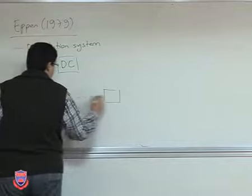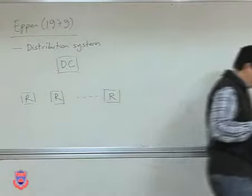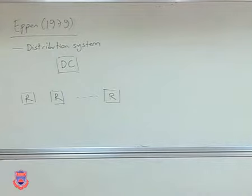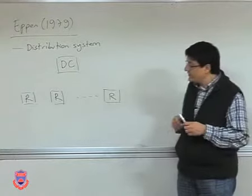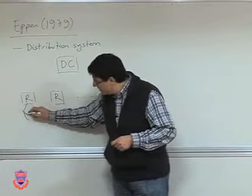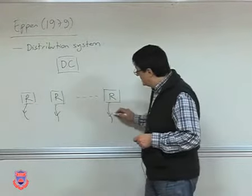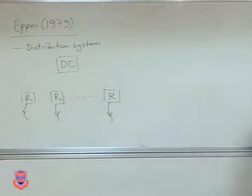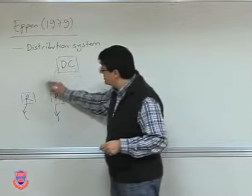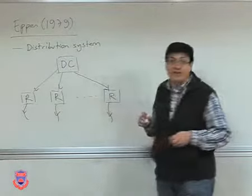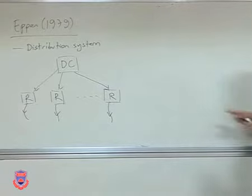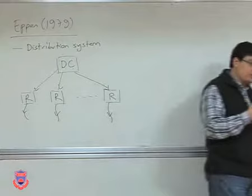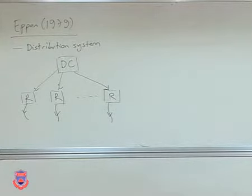We have different retailers. The question is: what is the way to control the inventory structure of this system, where the customer demand comes to the retailers? The retailers may be of different size, but I am sitting at the distribution center. What is the best way of controlling inventories? We are looking for an answer to that question. In this paper, we are not going to be concerned with transportation issues — this is simply an analysis where we will try to understand the benefits of centralization.